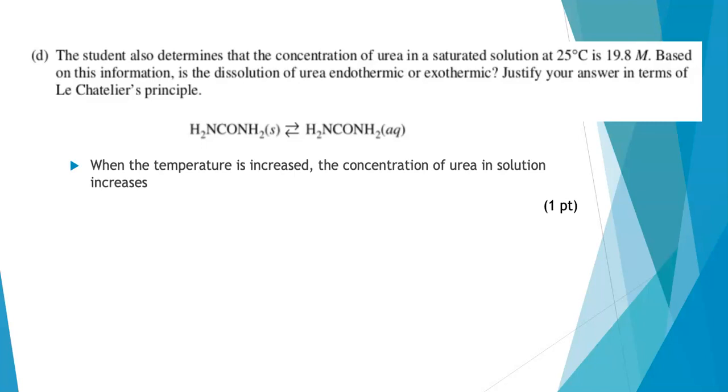So what we found, comparing the information given here to what we did in Part C, is that when the temperature is increased, the concentration of the urea in solution goes up. In other words, this stress on the system caused the system to shift right. So that implies that the energy term belongs with the reactants, which means that the process must be endothermic. For this part, you needed to say that it was endothermic and really go into your reasoning in terms of Le Chatelier's principle. You needed to have both parts to earn the point. Let's go on to Part E.